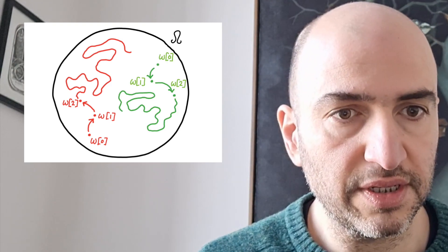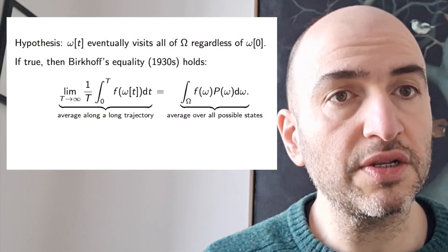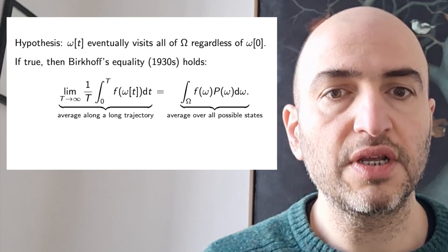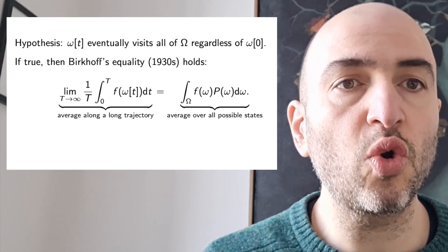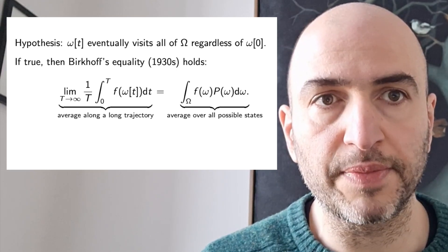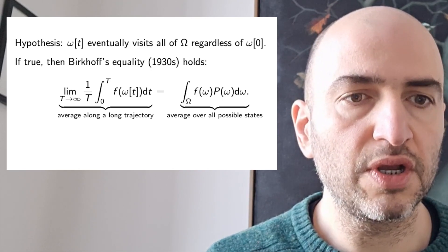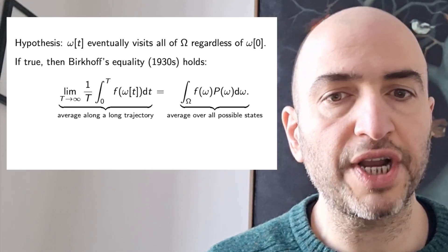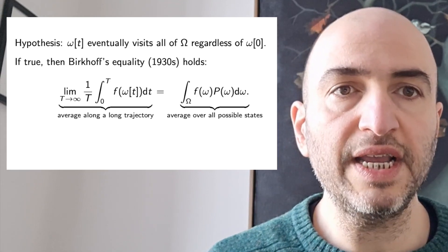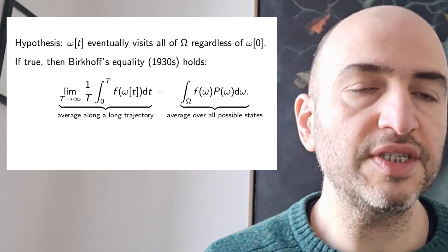If we start at a different point, then we will move through the state space in a different way. Now, there's an appealing hypothesis that we'd like to be able to make, which is that regardless of where it starts, the state little omega t visits all of the state space, big omega, with frequency proportional to the local probability density. If that's true, then Birkhoff's equality holds, which is that the average along a long trajectory of the function of the state variable will be equal to the probability-weighted average over all possible states. This is named after Birkhoff, who was a mathematician who studied the conditions under which such equalities hold in the 1930s.